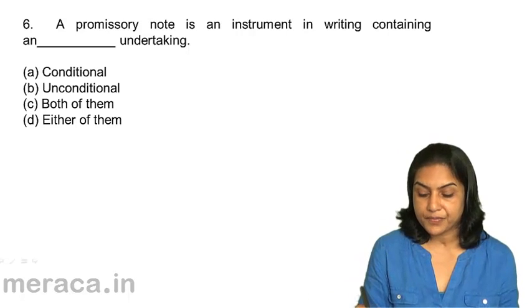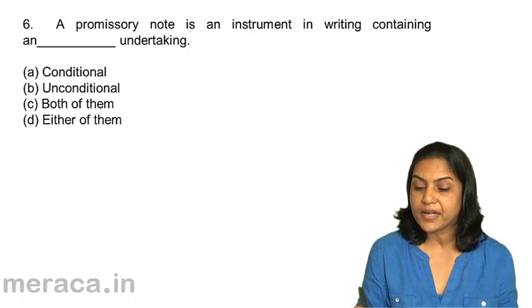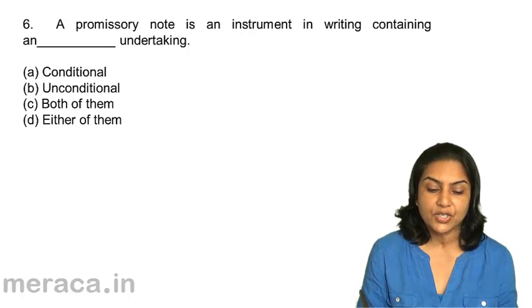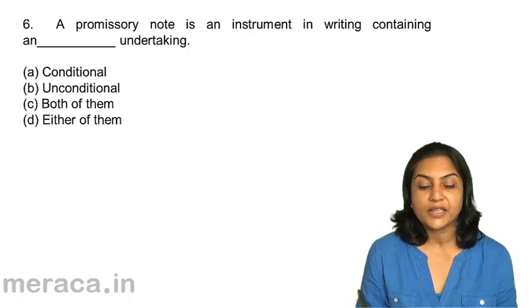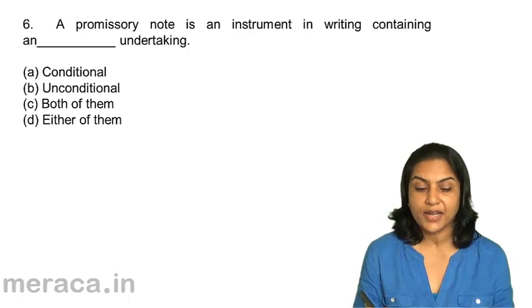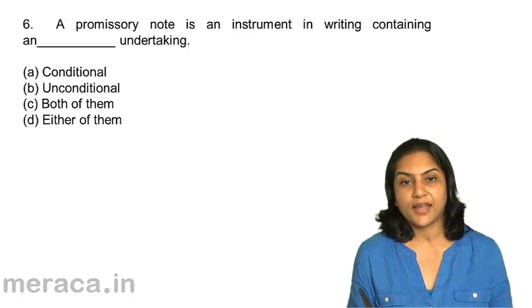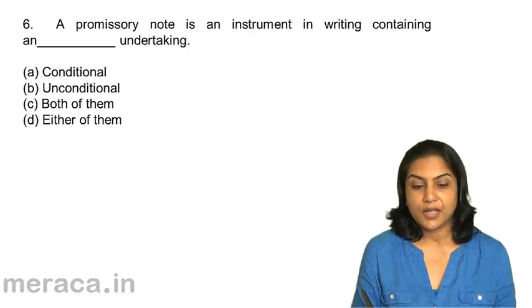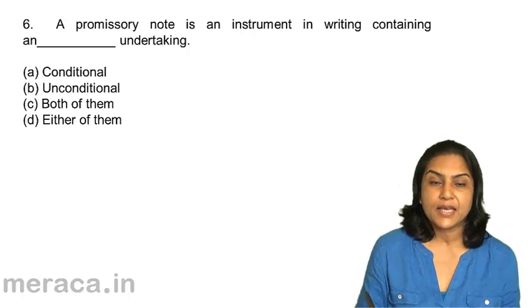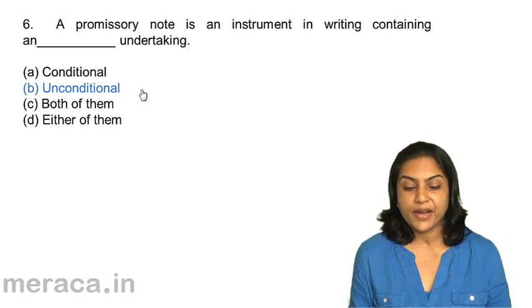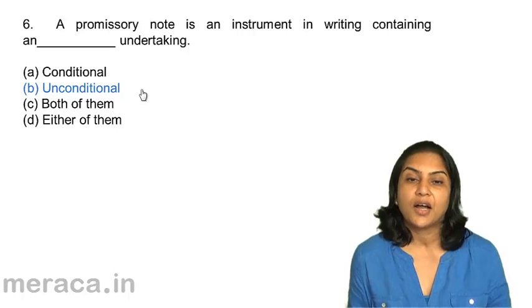A promissory note is an instrument in writing containing a blank undertaking. A. Conditional undertaking. B. Unconditional undertaking. C. Both of them. D. Either of them. A promissory note is an instrument in writing containing a blank undertaking — conditional or unconditional? The correct answer should be B — unconditional. A promissory note is an instrument in writing containing an unconditional undertaking.